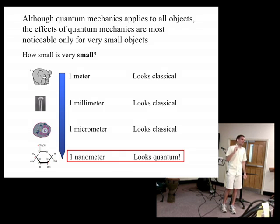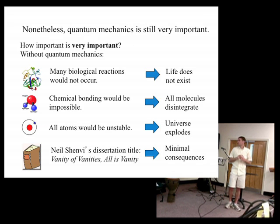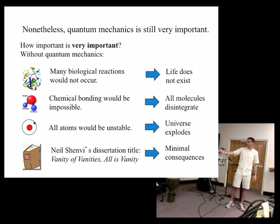Now even though quantum mechanics is visible only at small length scales, it's still incredibly important. For instance, without quantum mechanics, many biological reactions would not occur so we would have no life. Chemical bonding would be impossible, so we'd have no molecules. Even atoms depend on quantum mechanics for stability. And I wouldn't have a PhD - that's the worst of all. The bottom line though is that the universe as we know it would not exist without quantum mechanics. It's not a minor sort of footnote in the nature of reality.